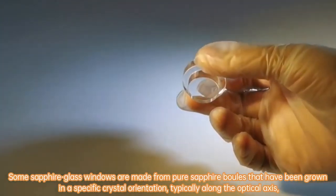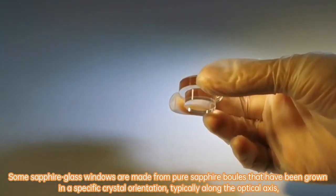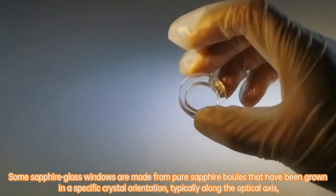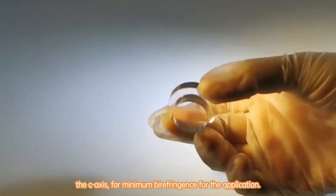Some sapphire glass windows are made from pure sapphire boules that have been grown in a specific crystal orientation, typically along the optical axis (the C-axis), for minimum birefringence for the application.